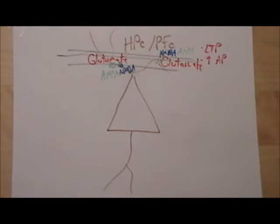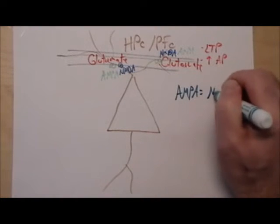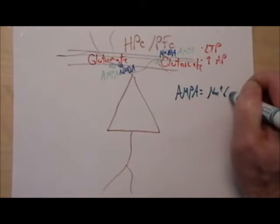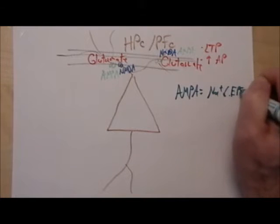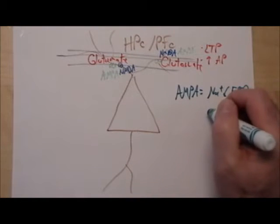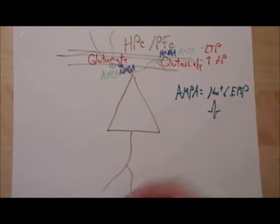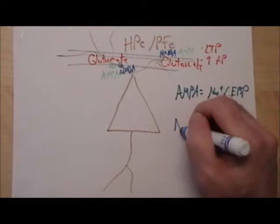So AMPA's main function is to allow sodium to come in, leading to depolarization, so excitatory post-synaptic potentials, and that can cause an increase in the incidence of action potentials. But it also sets up depolarization for the NMDA receptor.